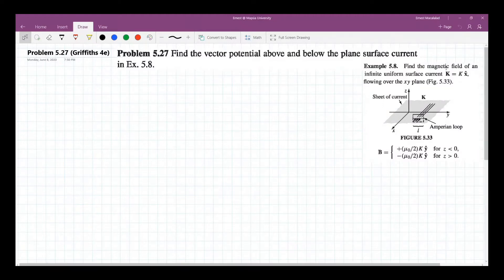So I took the liberty of showing you example 5.8. In example 5.8, which we'll discuss in our videos, we find the magnetic field of an infinite uniform surface current k pointing in the x direction, flowing over the xy plane.